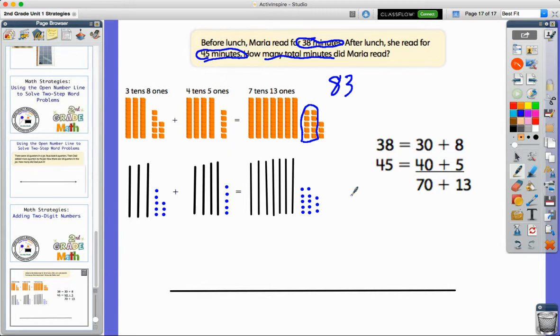Now, if you're doing a test or something, you might not have your base 10 blocks readily available. What you can do is you can do a quick draw. And so my quick draw is exactly the same thing that I did with the base 10 blocks, except the straight lines represent the tens and the little dots represent the ones.